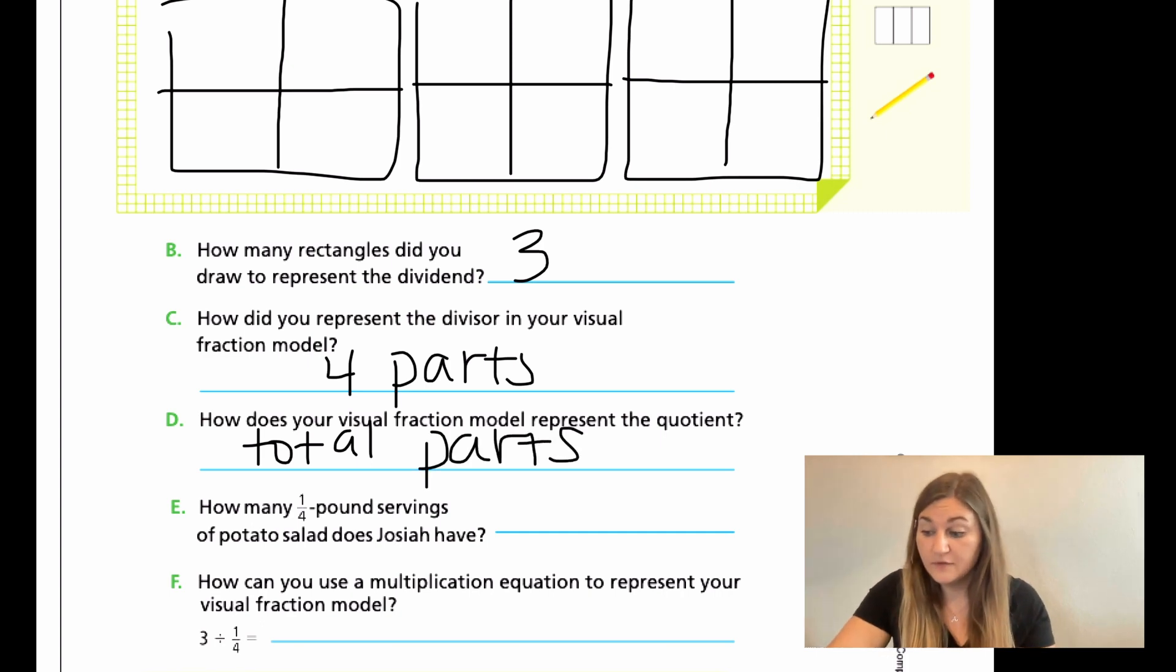And then for E, how many one fourth pound servings of potato salad does Josiah have? Well, this is where that related multiplication comes into play. So we have four and we have four three times. So four times three is 12. So we know that this would be 12 servings.